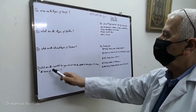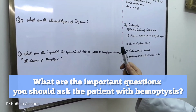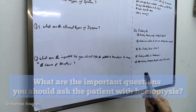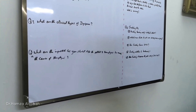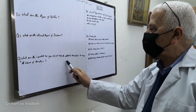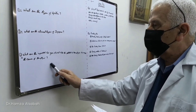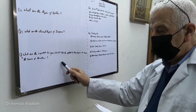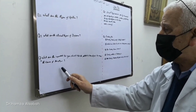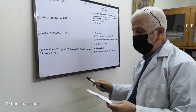The fourth question: for a patient with hemoptysis, what important questions should you ask? First, if hemoptysis is associated with a large amount of sputum, this is due to lung abscess or bronchiectasis. If hemoptysis is associated with weight loss, this is most probably TB or malignancy.